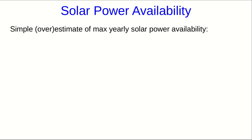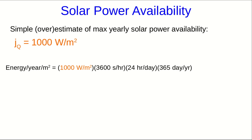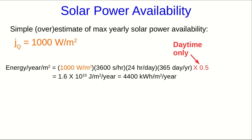The payback times for solar power will depend on the solar power availability at a given location. Let's get a simple estimate — a gross overestimate — of the maximum yearly power availability at any location. We start with the flux density, which for the sun directly overhead in dry air is about 1,000 watts per meter squared. To get the energy available per year per meter squared, we multiply that by a year and by a half for daytime only, giving about 4,400 kilowatt-hours per square meter per year.